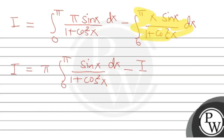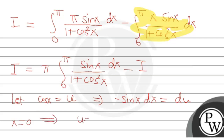Now we suppose cos x equals t. So minus sin x dx equals dt. When x equals 0, cos 0 equals 1, so t equals 1. When x equals π, cos π equals −1, so t equals −1. This gives us the substitution with new limits from 1 to −1.